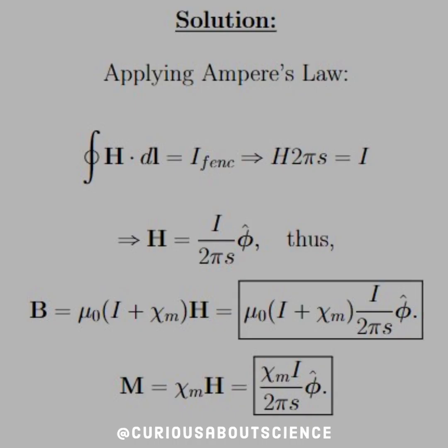All right, cool. So we need to apply Ampere's law. We see that we have the closed integral H dot DL is equal to I free enclosed. Of course, in our magnetic loop or Amperian loop, we have H times 2 pi S equals I. Okay, makes sense.